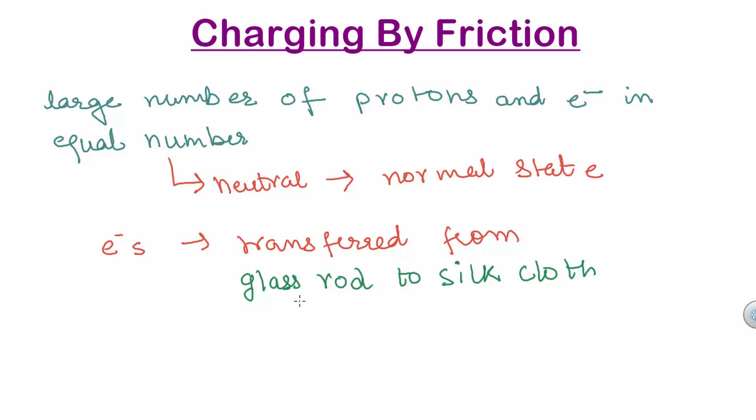As a result, the glass rod becomes positively charged and silk cloth becomes negatively charged because it has received extra electrons from the glass rod. In this case, glass rod after rubbing and comb after passing through dry hairs become electrified. And these are the examples of frictional electricity.